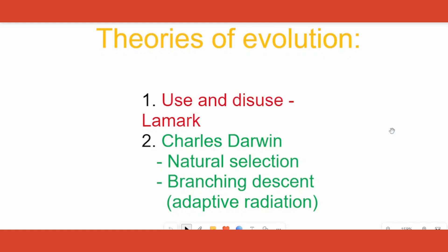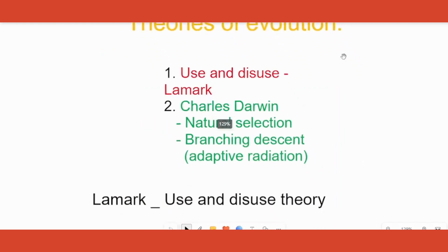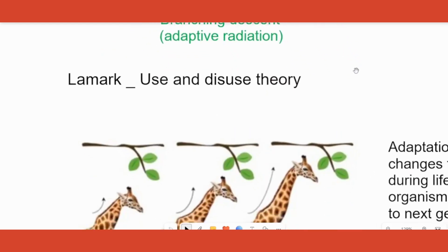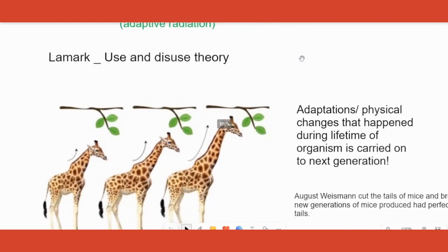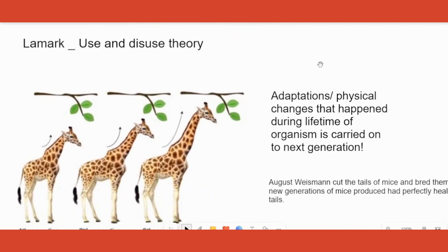We will go through both of them. The first is the theory called Use and Disuse by Lamarck. The next one is Darwinism, which includes natural selection as well as branching descent or adaptive radiation. The first theory is called Lamarck's Use and Disuse theory.